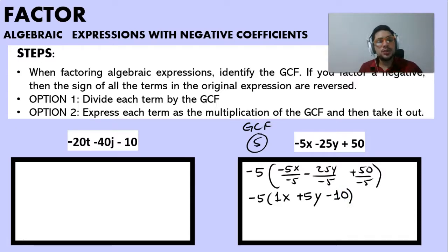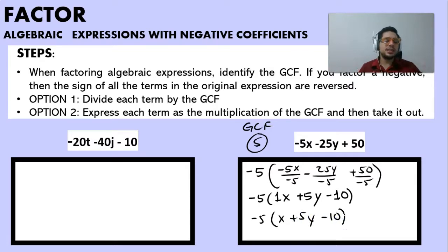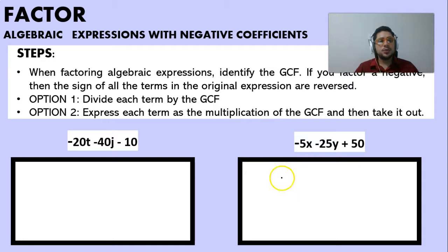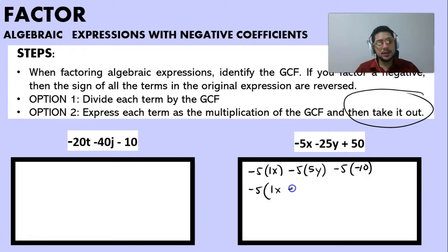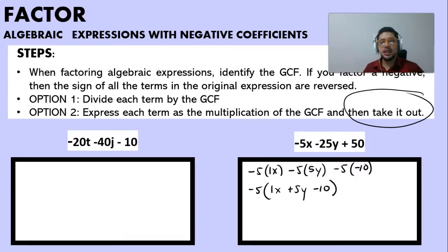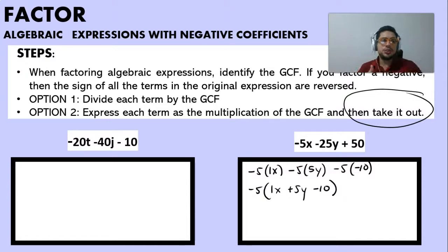This gives us minus 5 times (X + 5Y - 10), since 1X is the same as X. The other way is expressing it as a multiplication of minus 5: minus 5 times 1X, minus 5 times 5Y, and minus 5 times minus 10. In this video we saw how to divide each term by the GCF or express it as a multiplication, and how to factor a negative coefficient when most or all terms have a negative sign.